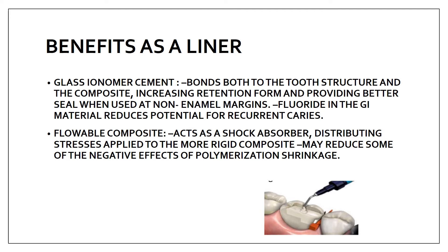The advantages of using flowable composite as a liner: it acts as a shock absorber, distributing the stresses applied to the more rigid composite. If you use a flowable composite under a normal composite, it helps in distributing stresses evenly. It may also reduce some of the negative effects of polymerization shrinkage, which is a major disadvantage of composite. The flowable composite under the normal composite helps in reducing that polymerization shrinkage.